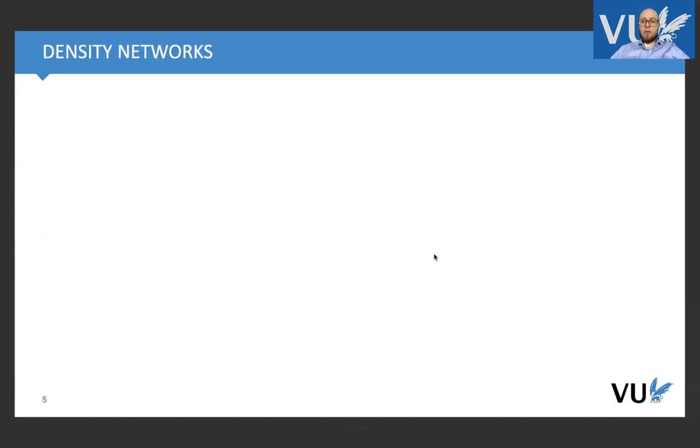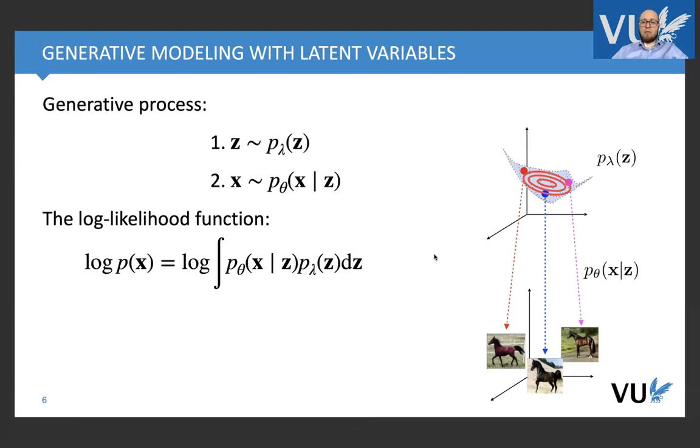And first, before we turn into real implicit models, we'll talk about density networks as an introduction to implicit models. So again, we have in mind this generative process in latent variable models, so we have some low dimensional z latent representation, and we have higher dimensional x, and we first sample in the low dimensional space, and then we decode it or generate a high dimensional object, like for instance, images of horses.